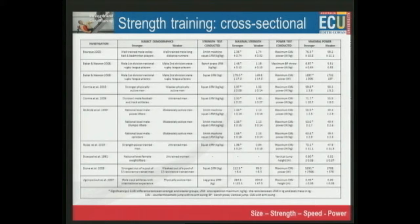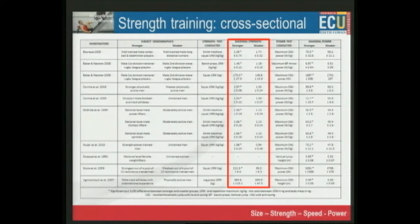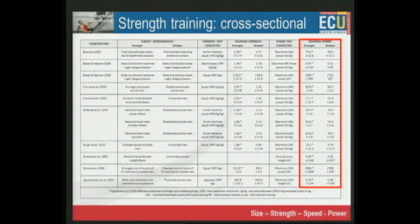Looking at a complex slide summarising studies on the effects of strength training on cross-sectional muscle area. Comparing stronger versus weaker athletes — in different types of tests including squat 1RM and bench press — we see the actual power output they can produce. The stronger the athlete, the greater the power output they can produce in movements such as bench press throw or counter-movement jump.